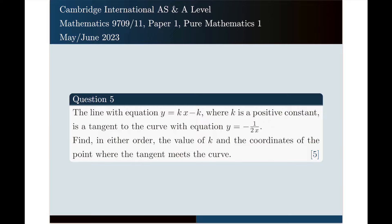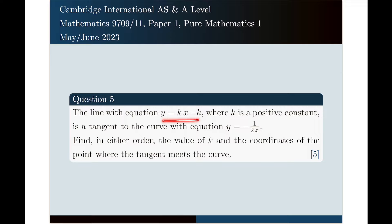Hello, in this video I'm going to solve question number 5 from this past paper. Let us read the problem together first. The line with equation y equals kx minus k, where k is a positive constant, is a tangent to the curve with equation y equals minus 1 over 2x. Find, in either order, the value of k and the coordinates of the point where the tangent meets the curve.